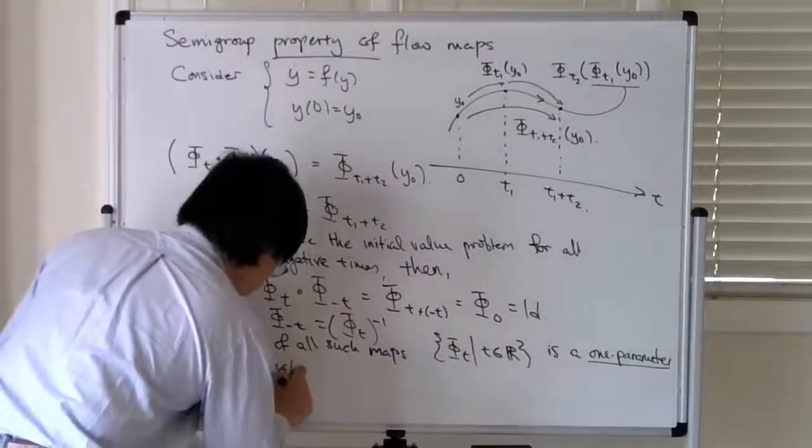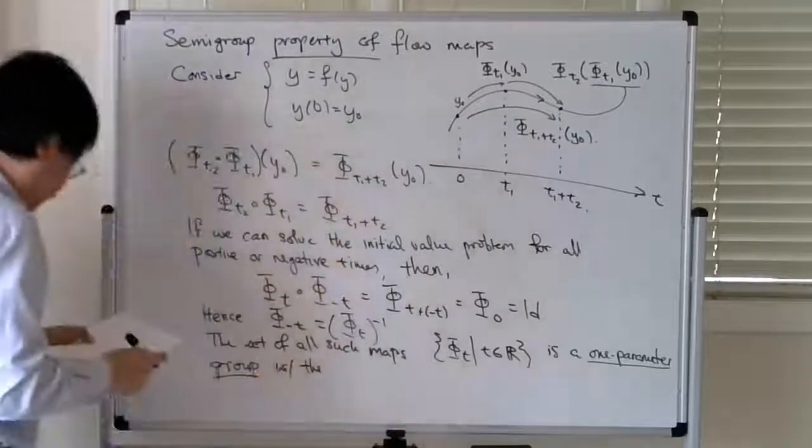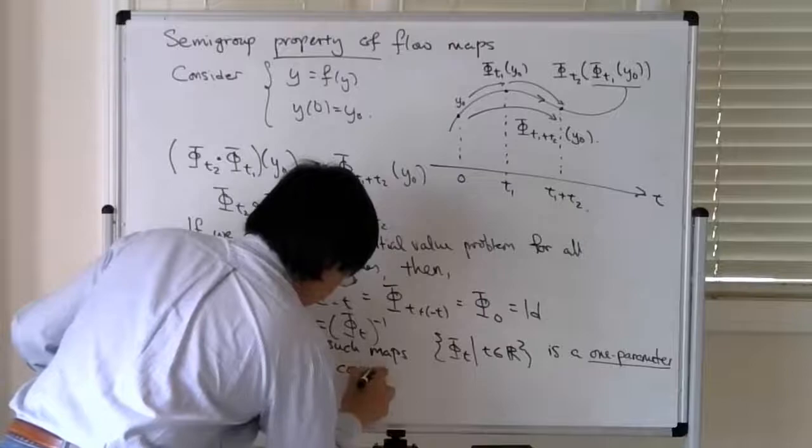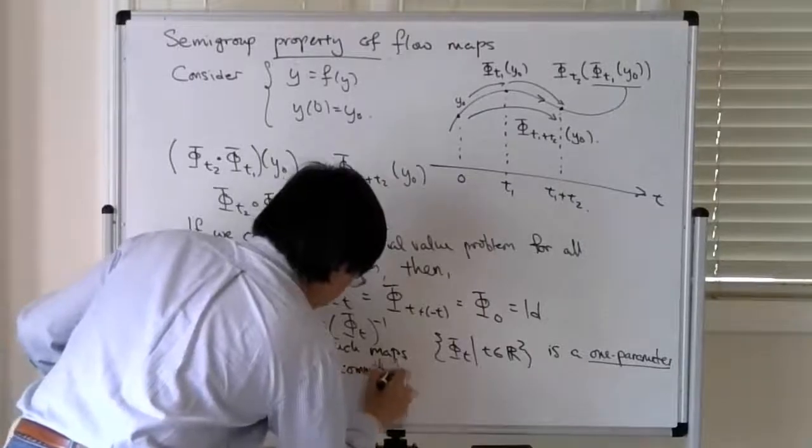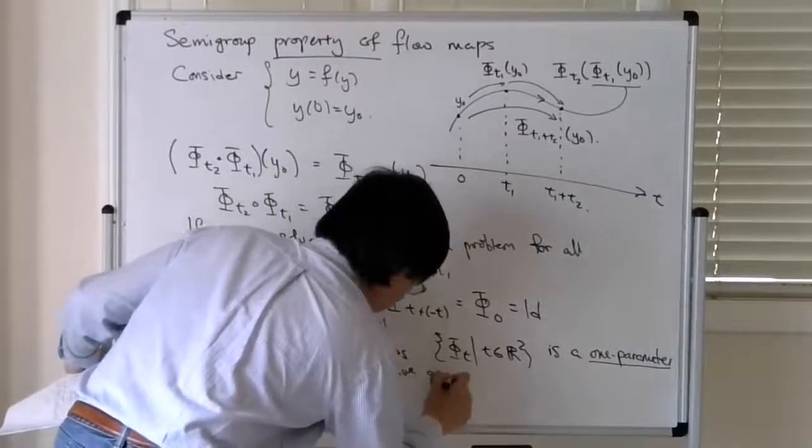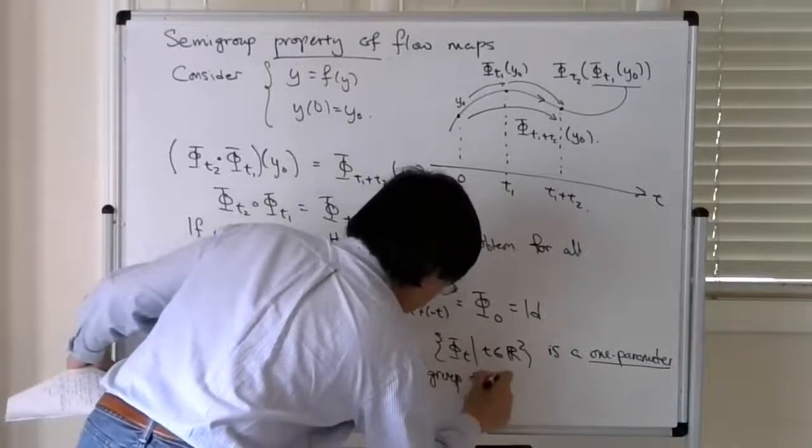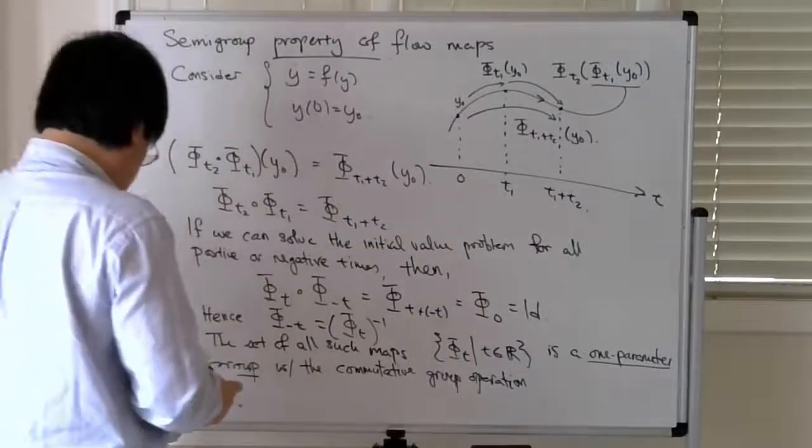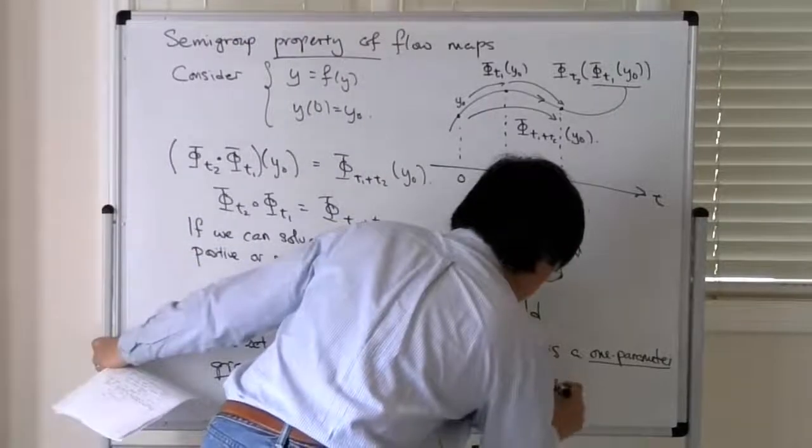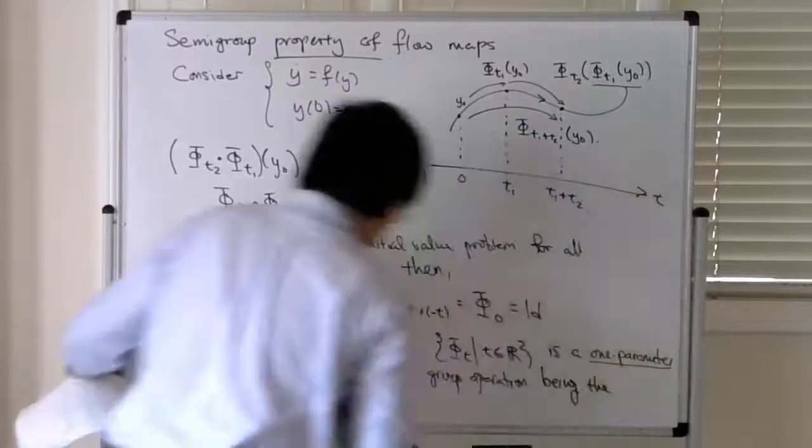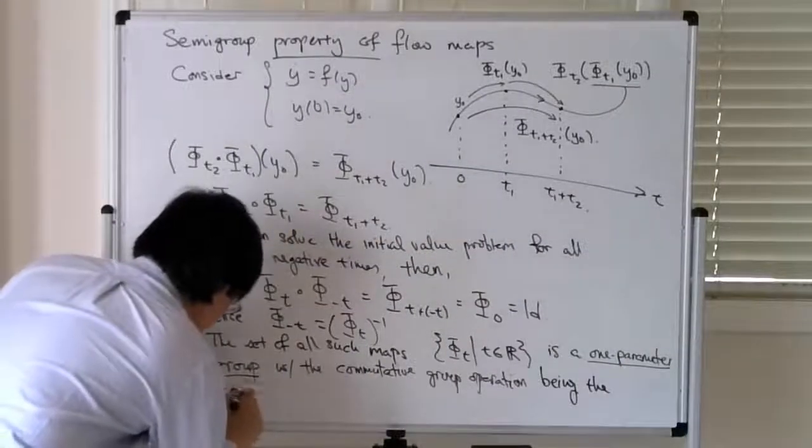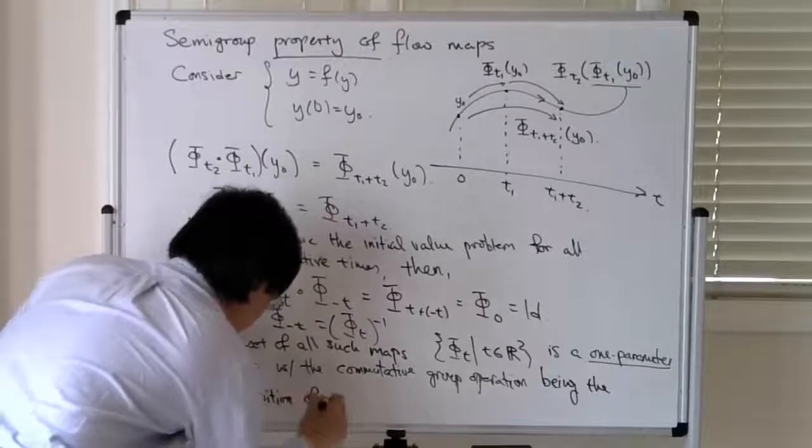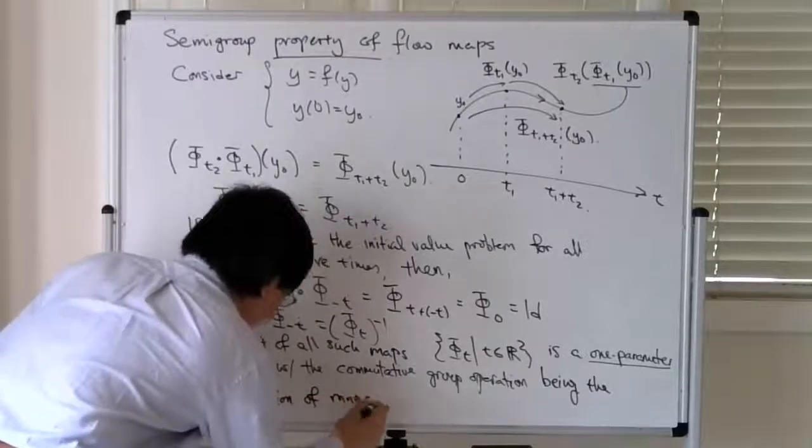With the commutative group operation, that being just the composition of maps.